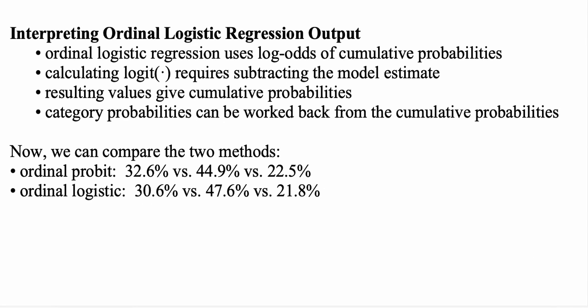Comparing the two models, the probability of responding unlikely was 30.6% from ordinal logistic regression and 32.6% from ordinal probit regression. These probabilities are close but not identical, which illustrates an important reason to consider both models — they give slightly different estimates, allowing us to select the model that most appropriately fits the data. I hope this review was useful. Thank you for listening.